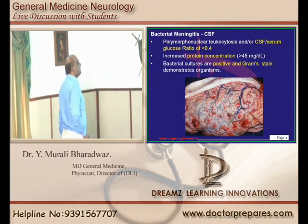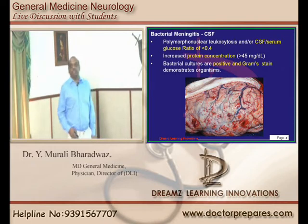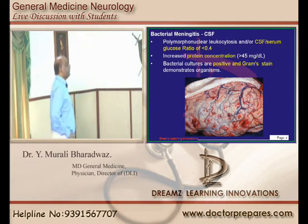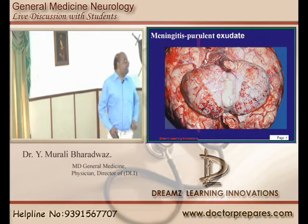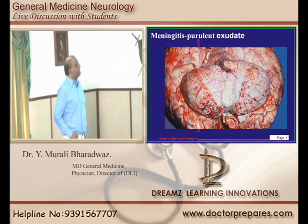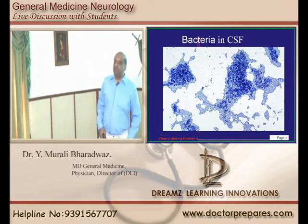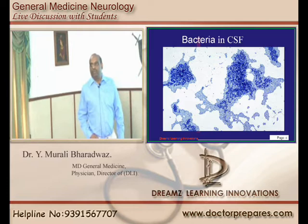The most common topic in neurology is meningitis, and invariably one question will be there on it in any entrance exam. Now, what are the important CSF findings in bacterial meningitis? If you look at the CSF-to-serum glucose ratio, there will be hypoglycorrhachia — low glucose levels less than 0.4 — increased protein concentration, and gram staining will be typically positive.